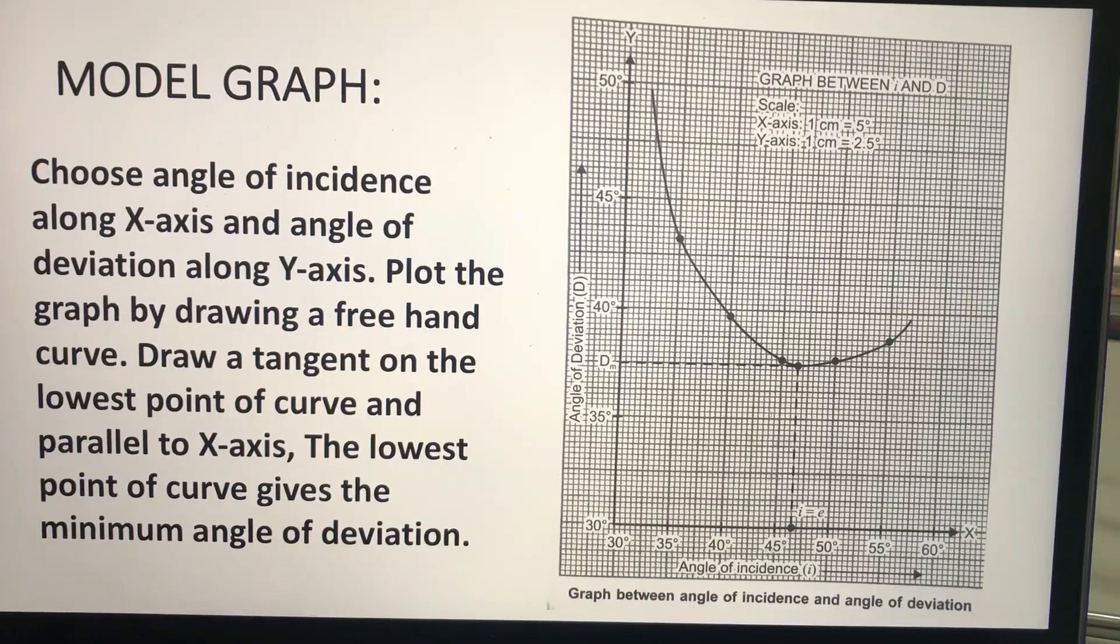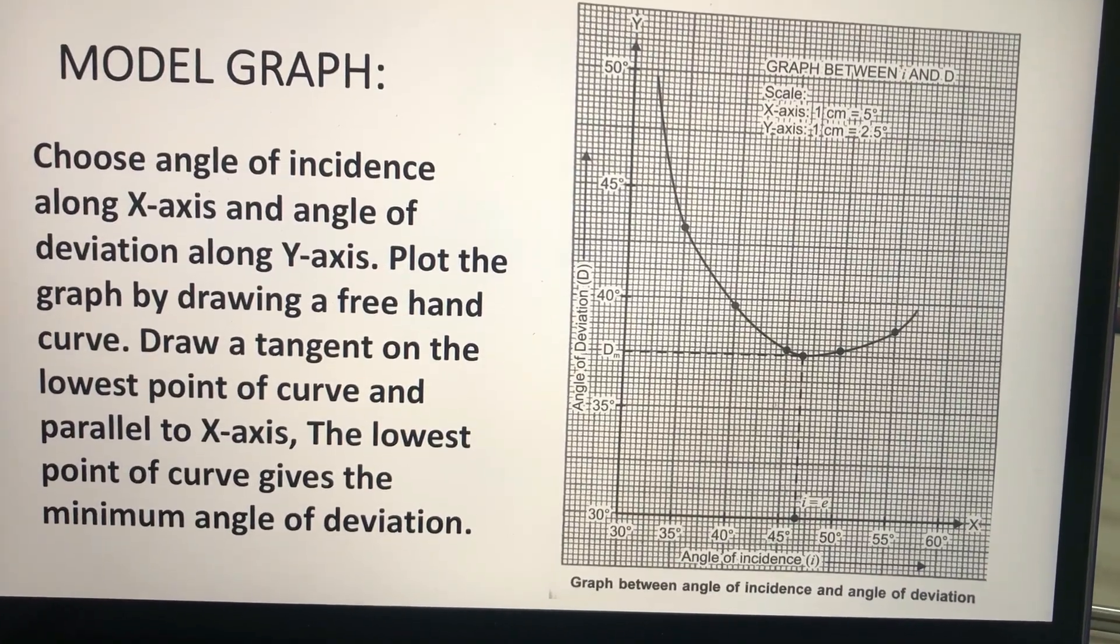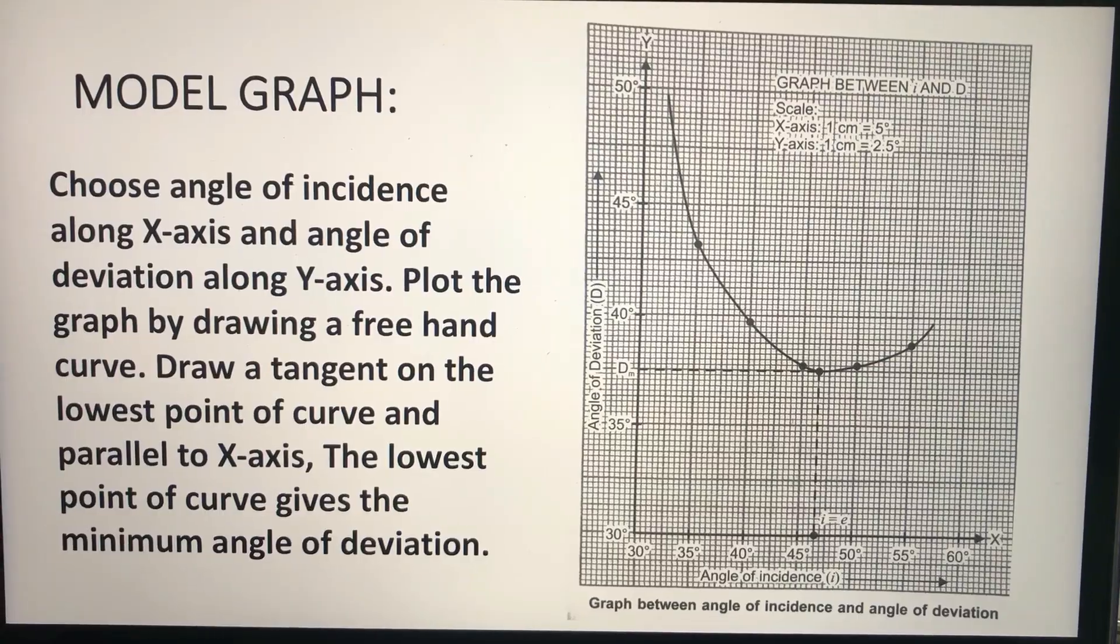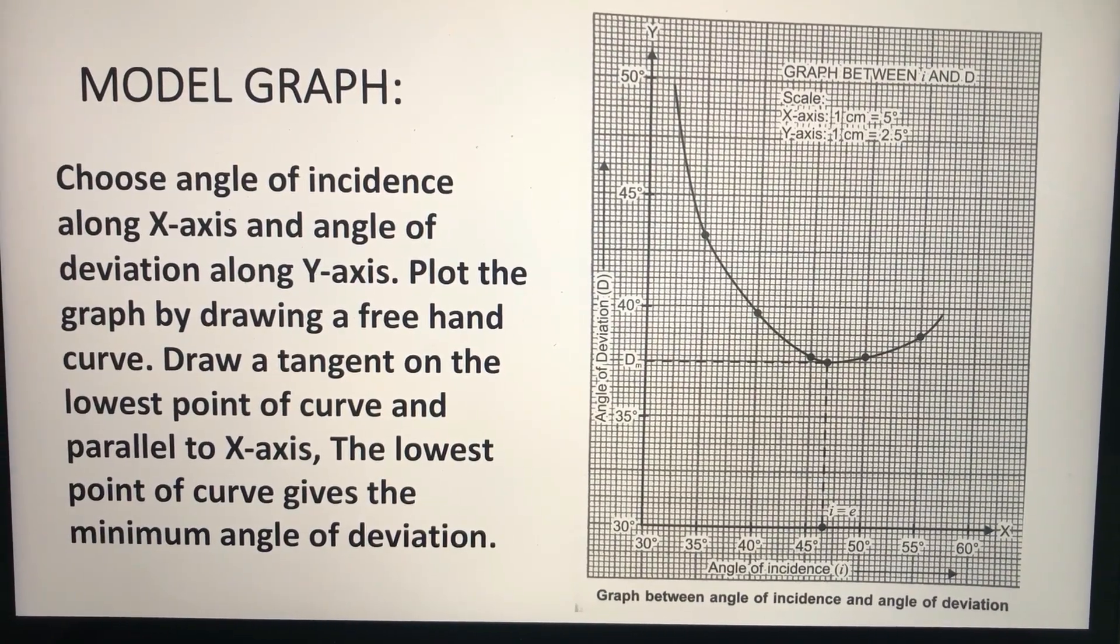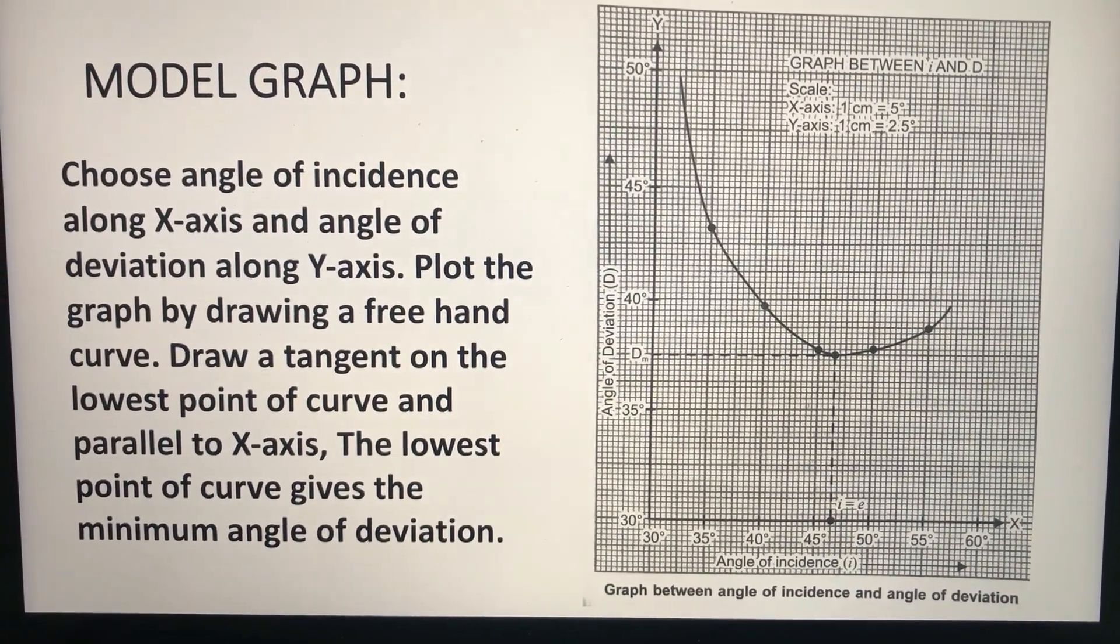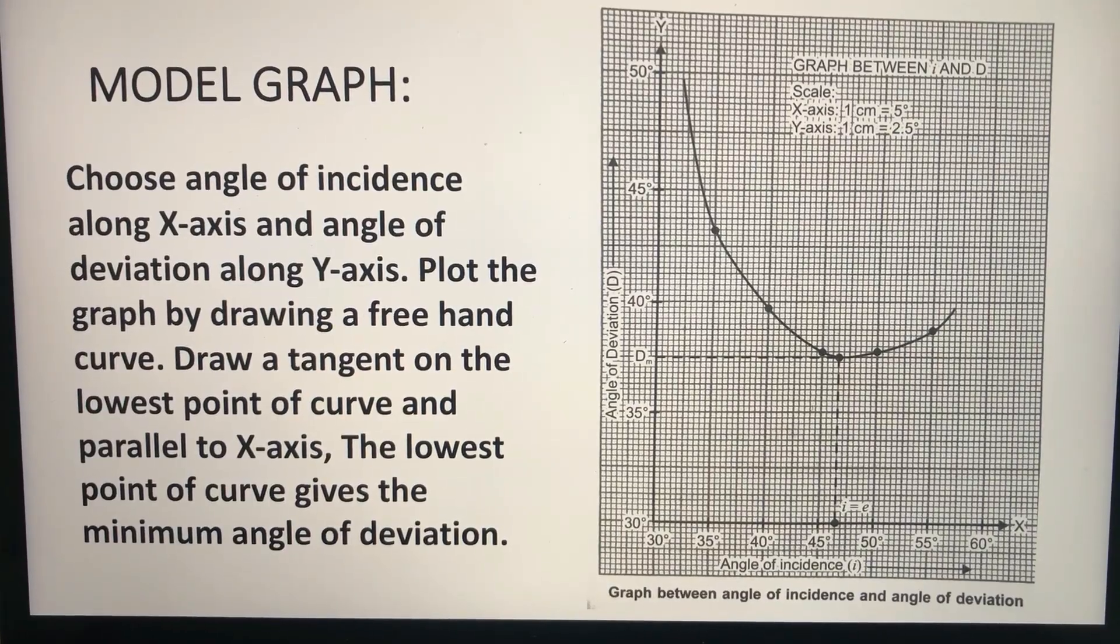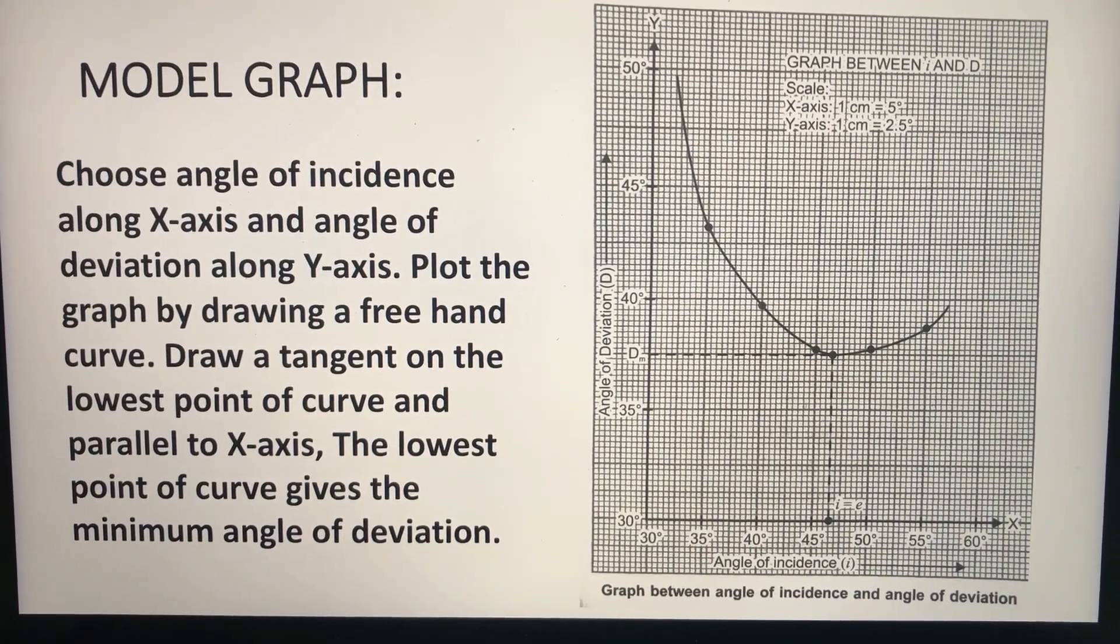Model graph: Choose angle of incidence along x-axis and angle of deviation along y-axis. Plot the graph by drawing a freehand curve. Draw a tangent on the lowest point of curve and parallel to x-axis. The lowest point of curve gives the minimum angle of deviation.